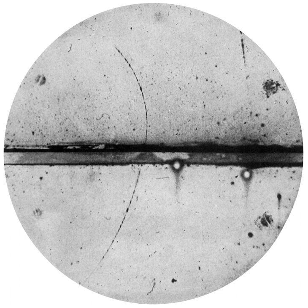These droplets are visible as a cloud track that persists for several seconds while the droplets fall through the vapor. These tracks have characteristic shapes. For example, an alpha particle track is thick and straight, while an electron track is wispy and shows more evidence of deflections by collisions.